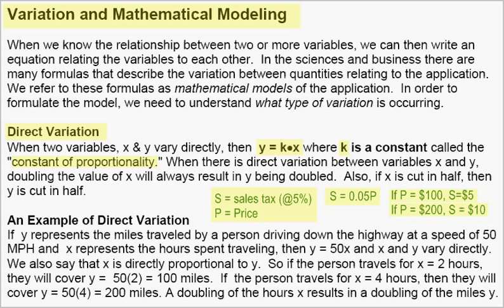We get the sales tax by multiplying 0.05 times the price. In another example at the bottom, I let y represent miles traveled by a person driving at a constant speed of 50 miles an hour, and x represents the hours spent traveling. The model we get here is y equals 50 times x. Rate times time equals distance. You will find that in application problems, we can use the given data to solve for k if it has not been given to us already.